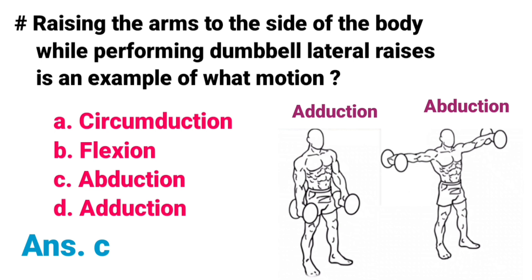Raising the arms to the side of the body while performing dumbbell lateral raises is an example of what motion? A) Circumduction, B) Flexion, C) Abduction, D) Adduction. Correct answer is option C, Abduction. Raising the arms to the side of the body is an example of abduction motion. Lowering them down is an example of adduction.